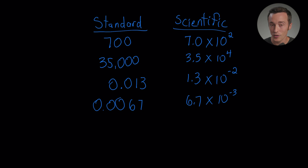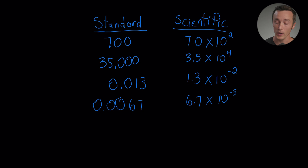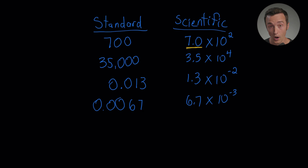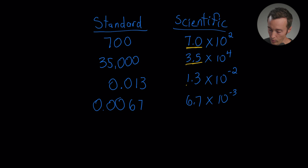When we get really large or really small numbers, scientific notation is going to pay off and make our lives a lot easier. As a quick refresher, there are a few things unique to scientific notation. First, the number out in front is always greater than or equal to one but less than ten — so 7.0, 3.5, 1.3, 6.7 are all numbers between one and ten.